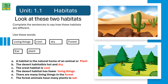Unit 1.1 Habitats. Look at these two habitats. Complete the sentences to say how these habitats are different. Use these words: living things, cool, dry, forest, eat, and plant. A habitat is the natural home of an animal or plant.